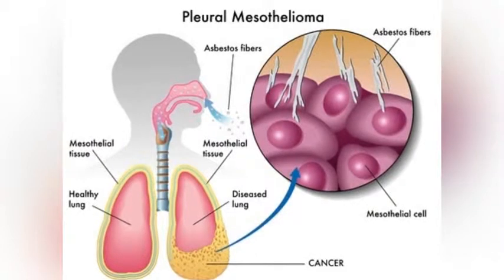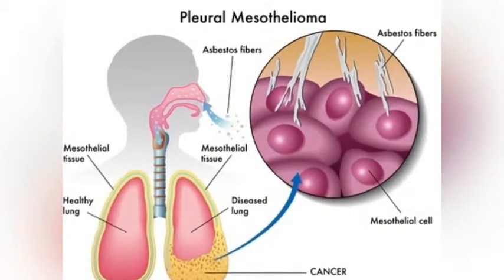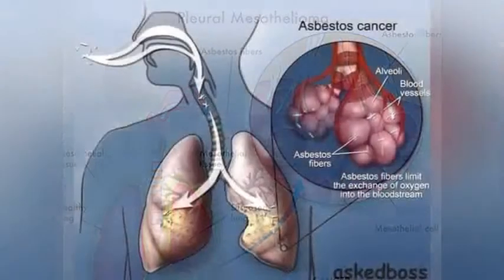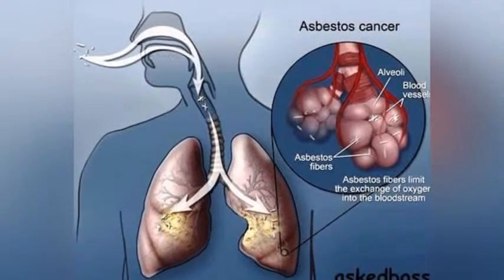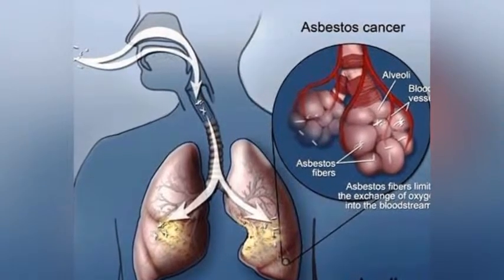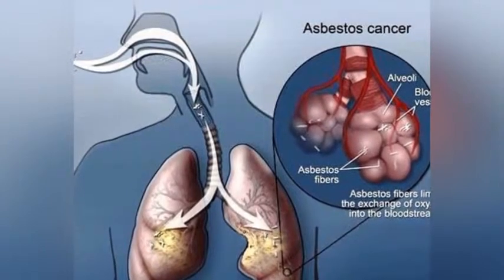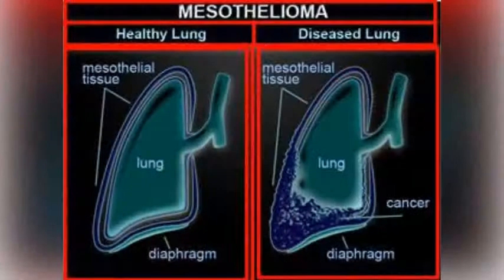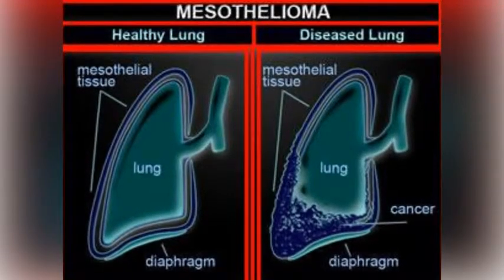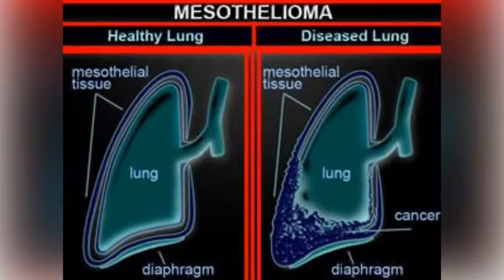The incidence of mesothelioma has been found to be higher in populations living near naturally occurring asbestos. People can be exposed to naturally occurring asbestos in areas where mining or road construction is occurring, or when the asbestos-containing rock is naturally weathered. Another common route of exposure is through asbestos-containing soil, which is used to whitewash, plaster, and roof houses in Greece.